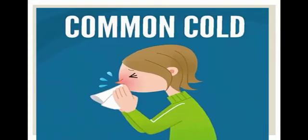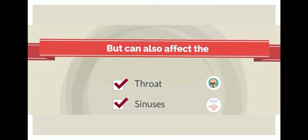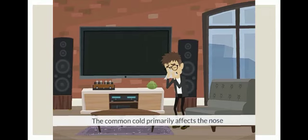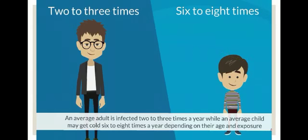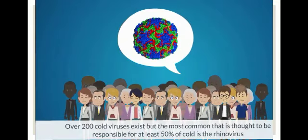First disease: common cold. Common cold is a viral infection that affects the upper respiratory tract, but also affects the throat and sinuses. The common cold primarily affects the nose. An average adult is infected 2 to 3 times a year, while an average child may get a cold 6 to 8 times a year. Over 200 cold viruses exist, but the most common thought to be responsible for at least 5% of colds is the rhinovirus.